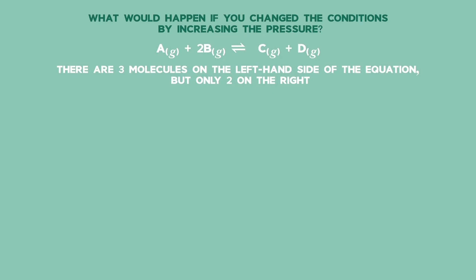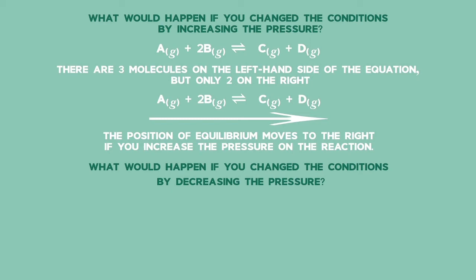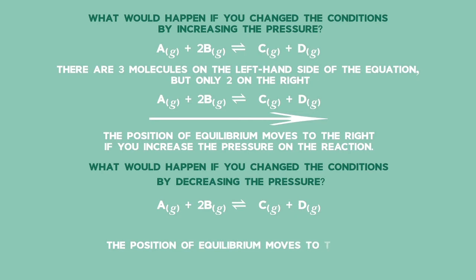A(g) + 2B(g) forms C(g) + D(g). The position of equilibrium moves to the right if you increase the pressure. What would happen if you decrease the pressure? The equilibrium will shift so that the pressure increases again by producing more molecules. The position of equilibrium will shift towards the left-hand side of the reaction, favouring the reverse reaction. The position of equilibrium moves to the left if you decrease the pressure.